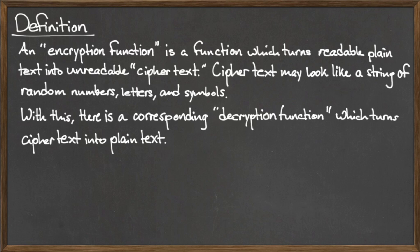The sender of the message uses an encryption function to scramble or encrypt their plain text message into the unreadable ciphertext, and the ciphertext is then sent to the recipient.